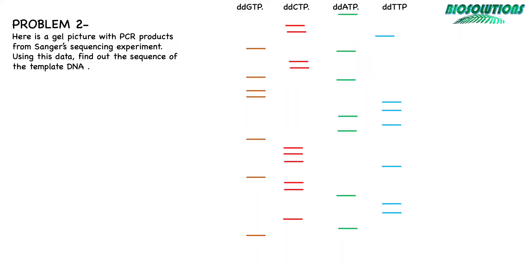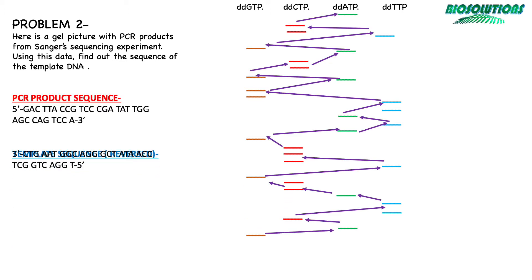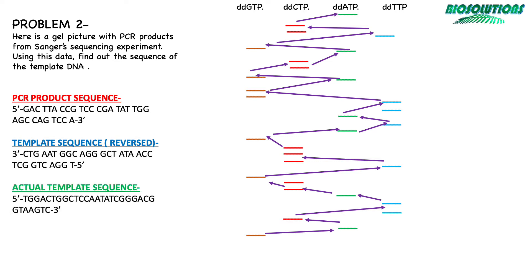For problem number 2, from the given gel picture, if we deduce the PCR product sequence starting from the bottom, which will be the 5' end, then it will be reading like this as given here. Hopefully your answers are matching.